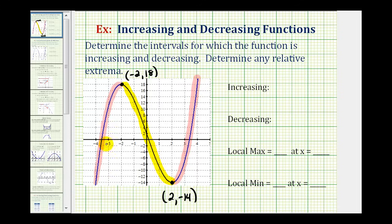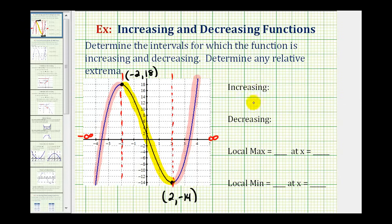Notice how the function changes from increasing to decreasing at x equals negative 2, and then from decreasing to increasing at x equals positive 2. As we move right on the x-axis, we approach positive infinity; as we move left, we approach negative infinity. Now we have all the information we need to determine where the function is increasing or decreasing and list any relative extrema.